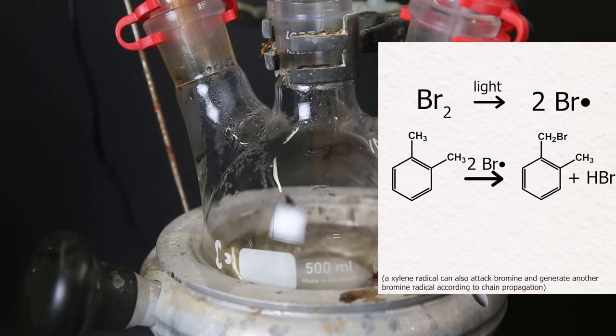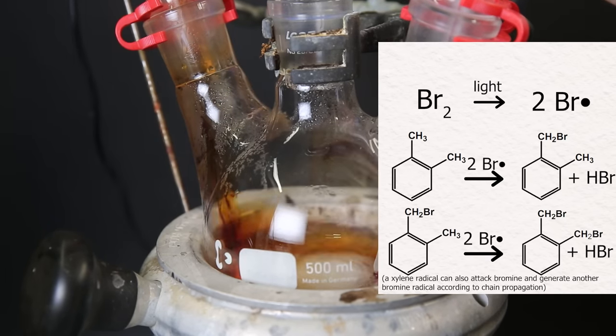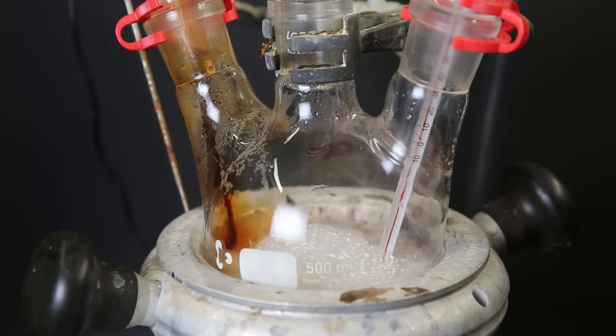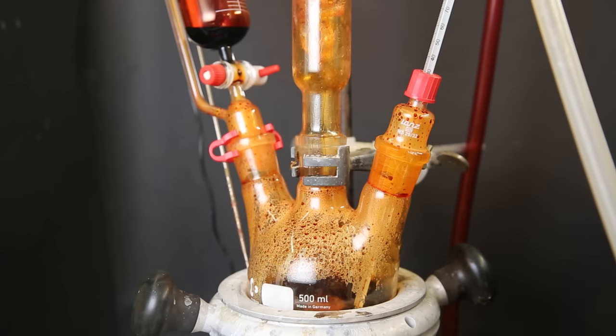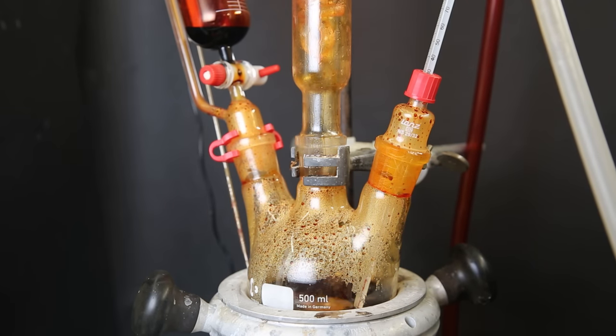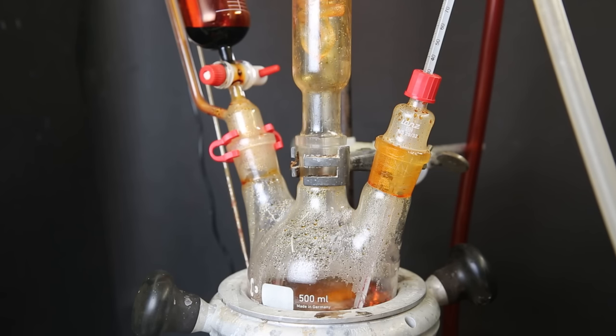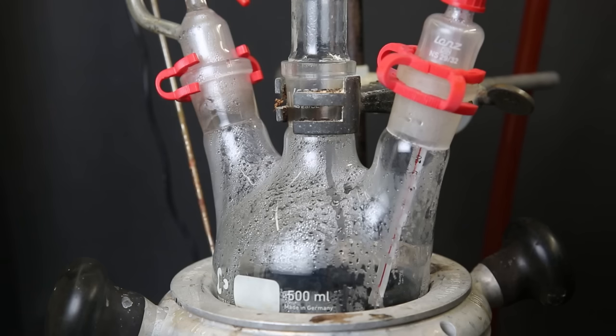The bromine vaporizes easily because of the heat, but it seems to also react with xylene in the gas phase, so it's not really a problem. Now when the temperature is too low, the bromine won't react, so it's important that the xylene keeps boiling. When it is brought to a boil, we can see the bromine disappear again, and I can start adding more. When all of the bromine has been added, I leave it to boil for 30 more minutes.